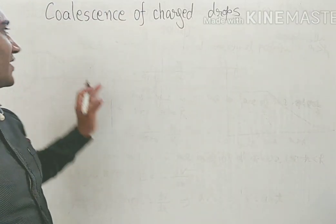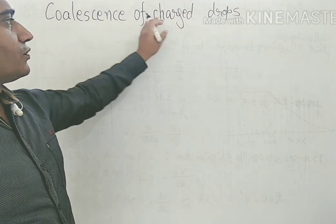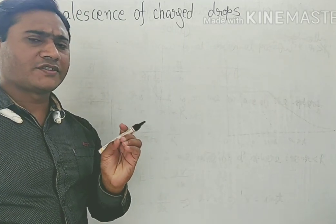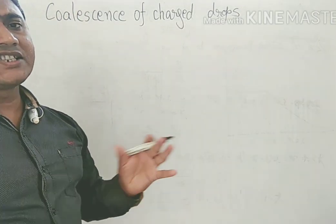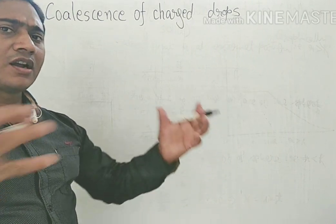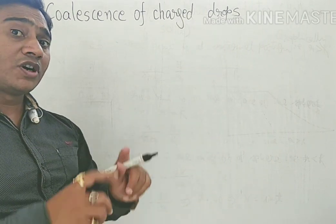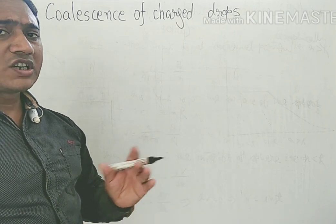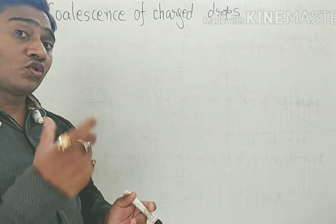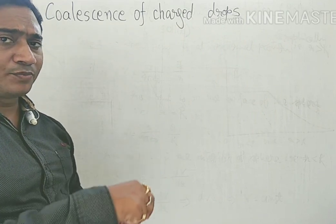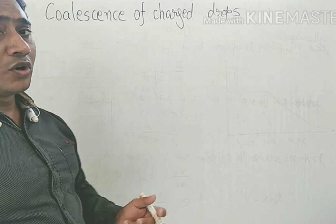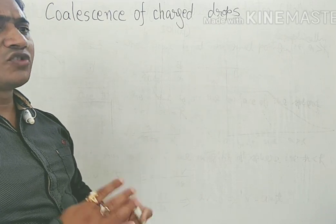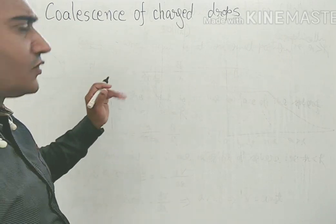Next topic: coalescence of charged drops. Suppose we have n number of small droplets of radius small r, each having charge small q. They are combined to form a bigger drop of radius capital R. We'll discuss the relations for charge, potential, electric field intensity, and surface charge density of the bigger drop.